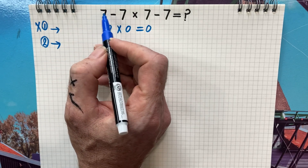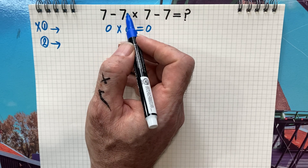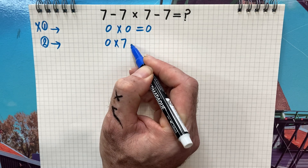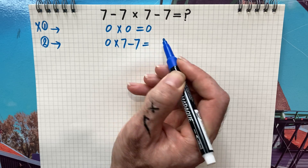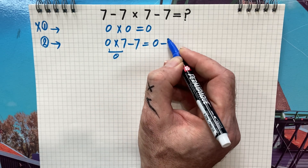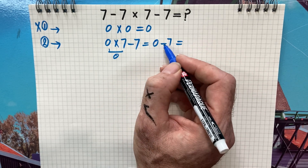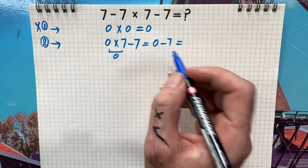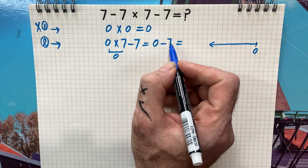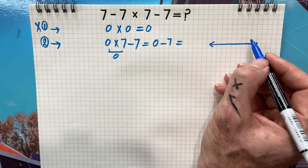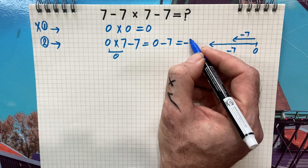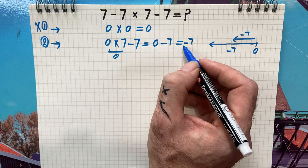Next, let's start from left and go to the right. Seven minus seven is zero, so zero times seven is zero, giving us zero minus seven. Using a number line: zero minus seven means we go left seven units, so zero minus seven is negative seven. But this is also the wrong answer.